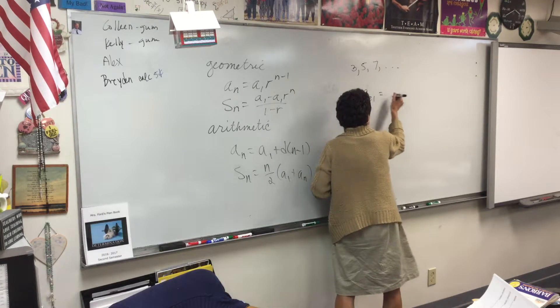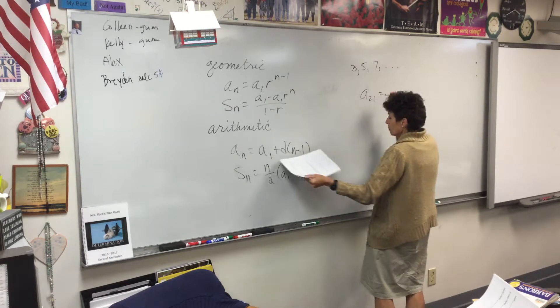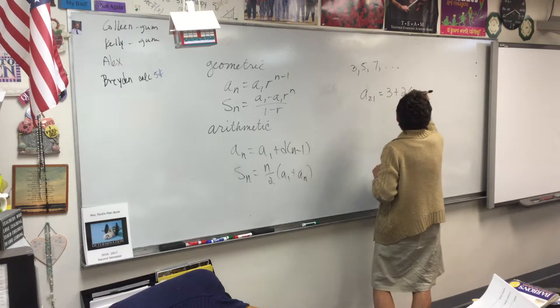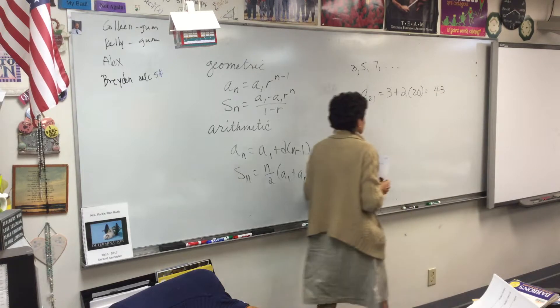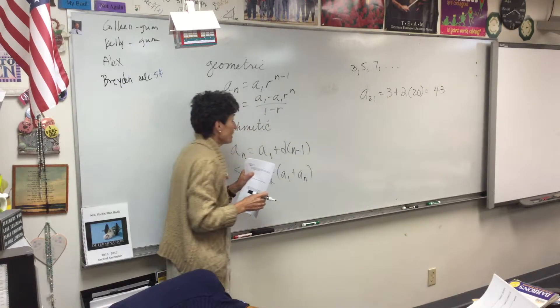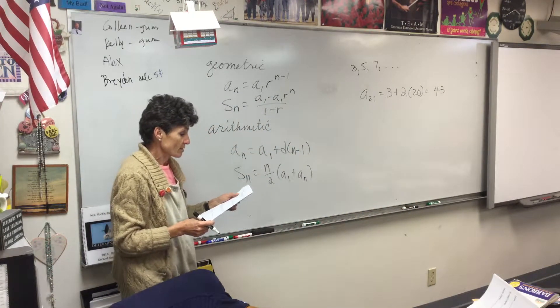So, the 21st term, according to my formula, is the first term plus the difference times 20. So, I think she got 43 strikes. If I did my arithmetic right, she got 43 strikes on the last day.